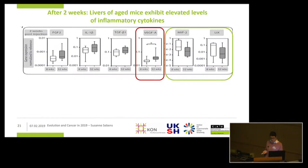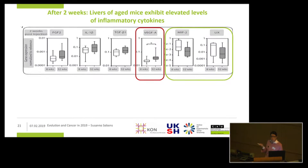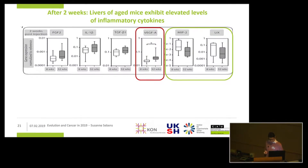We then used the livers to assess signs of inflammation. In line with the literature, we could detect higher levels of many inflammatory mediators in the aged mice. Most strikingly different were the levels of the vascular endothelial growth factor, VEGF, which is known to be a pro-angiogenic factor — this was increased in the aged livers. However, we also found some factors more elevated in the young livers, such as MIB2 and LIX, which are homologs of human IL-8. Please keep in mind IL-8 and VEGF, because this will play a role later on.